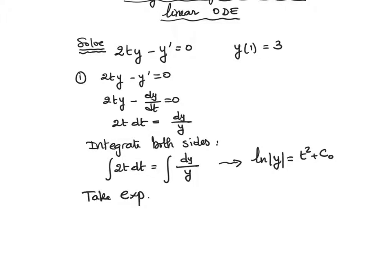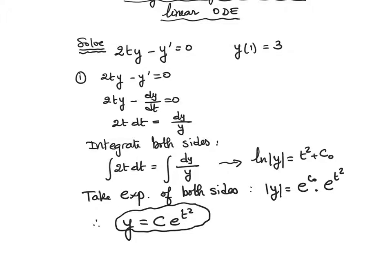Which basically means that y is a constant multiplied by e^(t²). So that is the general solution of the homogeneous equation.